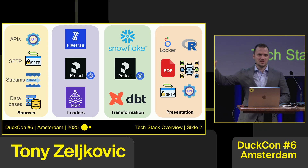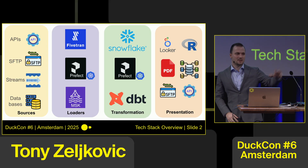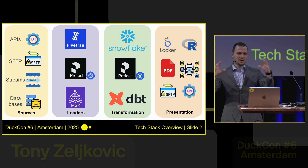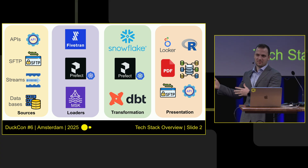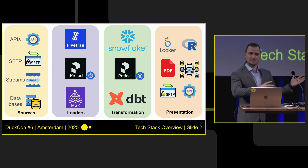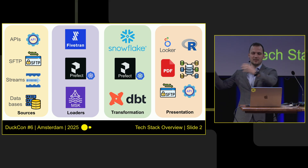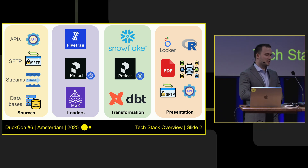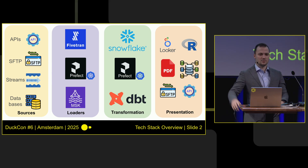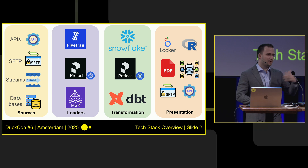Just a very quick overview of what the tech stack is. We have various sources like APIs, Kafka Streams, and upstream databases. We load this through SaaS tools like Fivetran or an orchestrator. We have Prefect plus DBT. We get that into Snowflake and then transform it with DBT. And we generate reports like PDFs, Looker dashboards, eligibility files, and more.